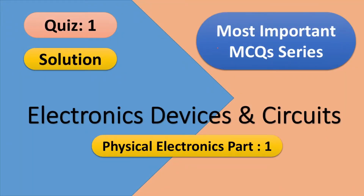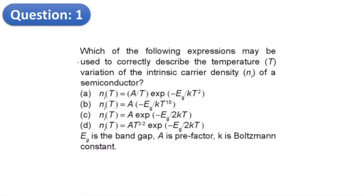Welcome to the most important MCQ series on Electronic Devices and Circuits. The topic is Physical Electronics Part 1, and this is the solution of Quiz Number 1. The first question asks: which of the following expressions may be used to correctly describe the temperature variation of the intrinsic carrier density Ni of a semiconductor?